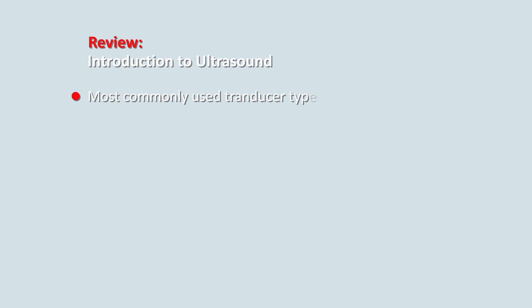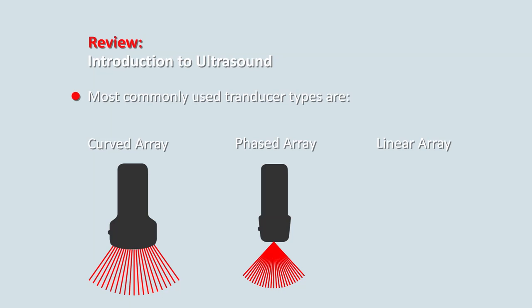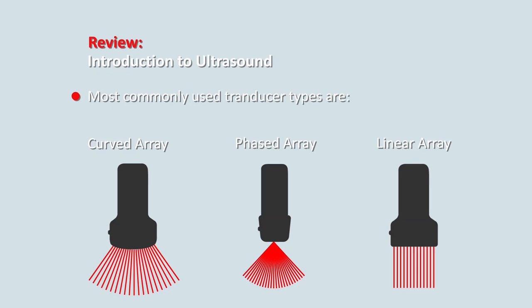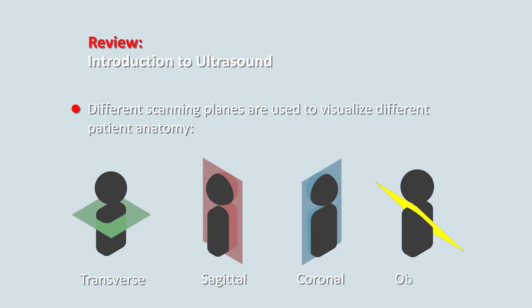Let's review transducer types and imaging modes. The most common transducer types are curved array, phased array, and linear array. Curved array produces a large field of view including the near field and far field. Phased array offers a small face to get between the ribs. And a linear array provides high resolution imaging and a large near field image. Different scanning planes are used to visualize patient anatomy depending on the position and orientation of the anatomy being scanned. The scanning planes used are transverse, sagittal, coronal, and oblique.